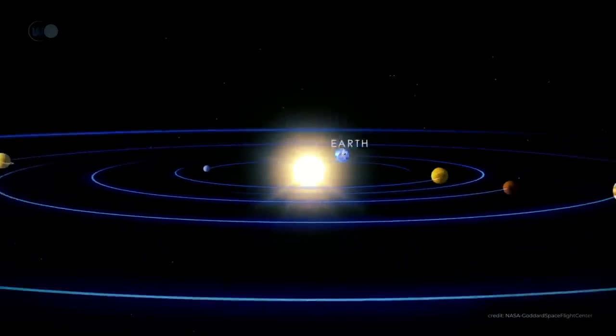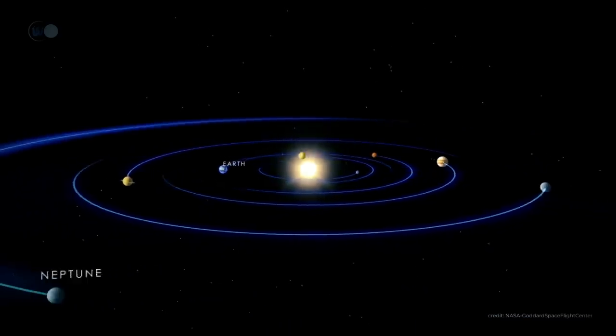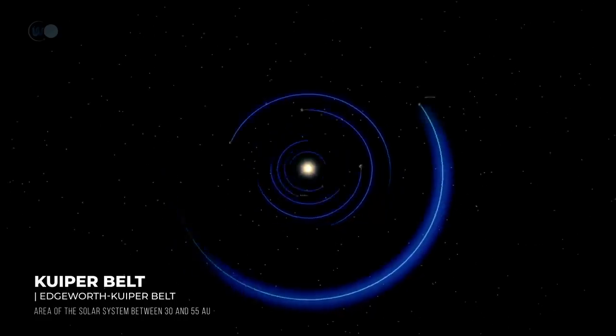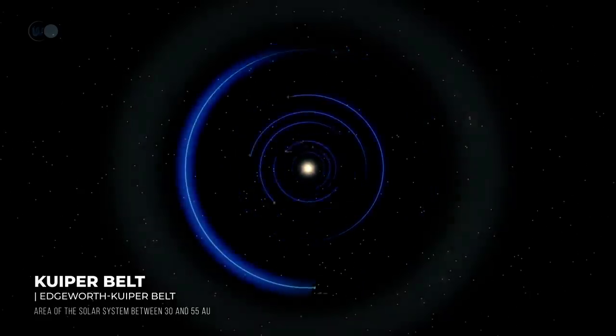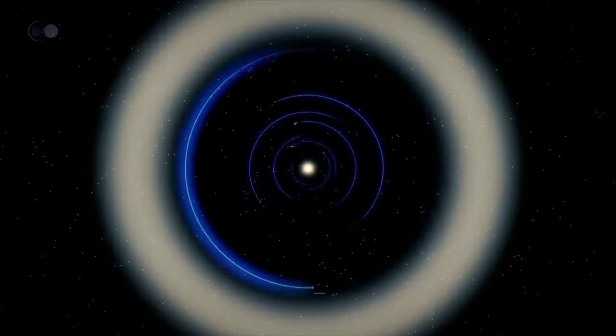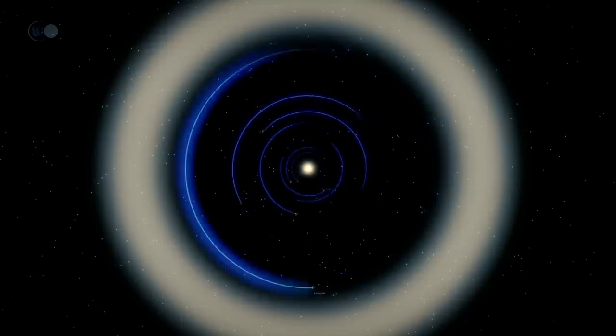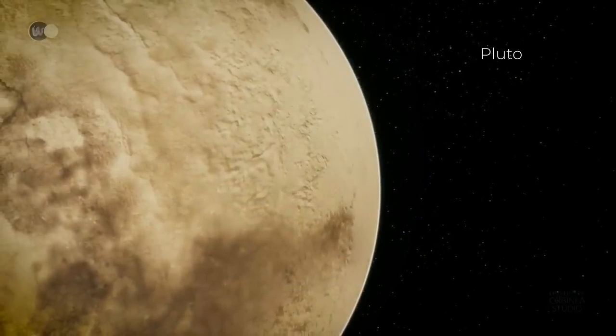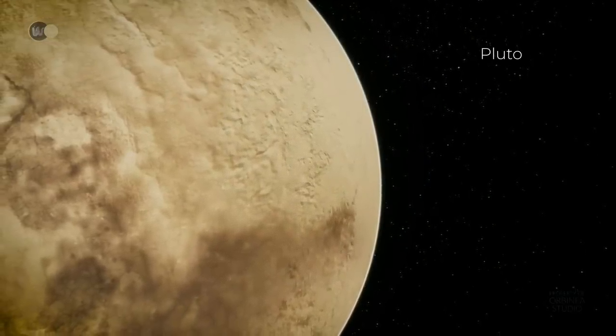Our solar system goes far beyond these eight planets. It also includes the Kuiper Belt, which extends beyond Neptune's orbit, probably between 30 and 55 astronomical units. This immense but sparsely occupied ring includes the dwarf planet Pluto, virtually the largest of the icy objects in it.